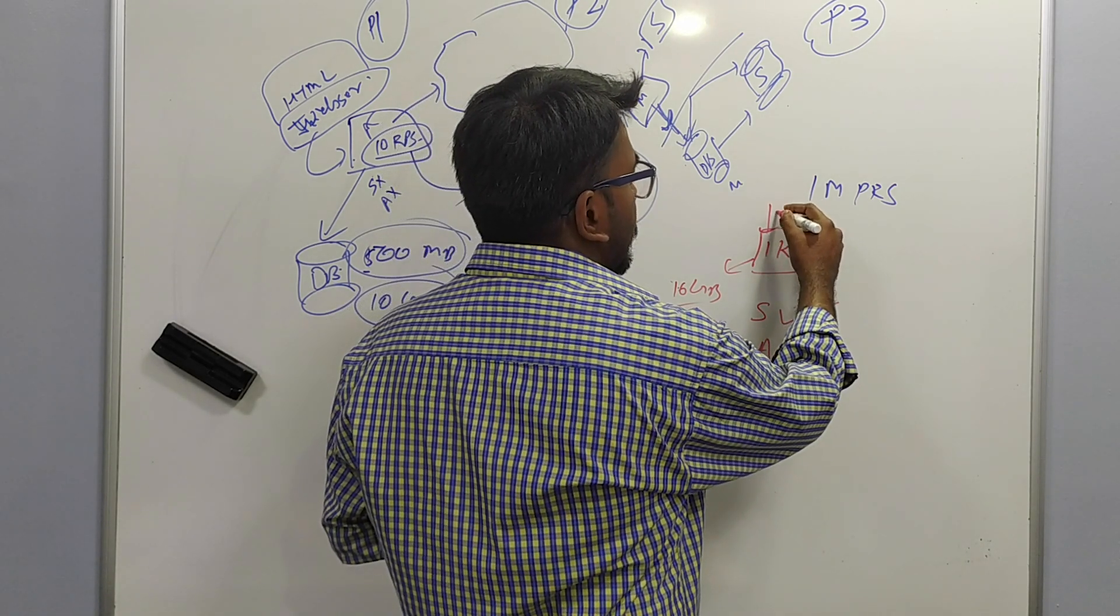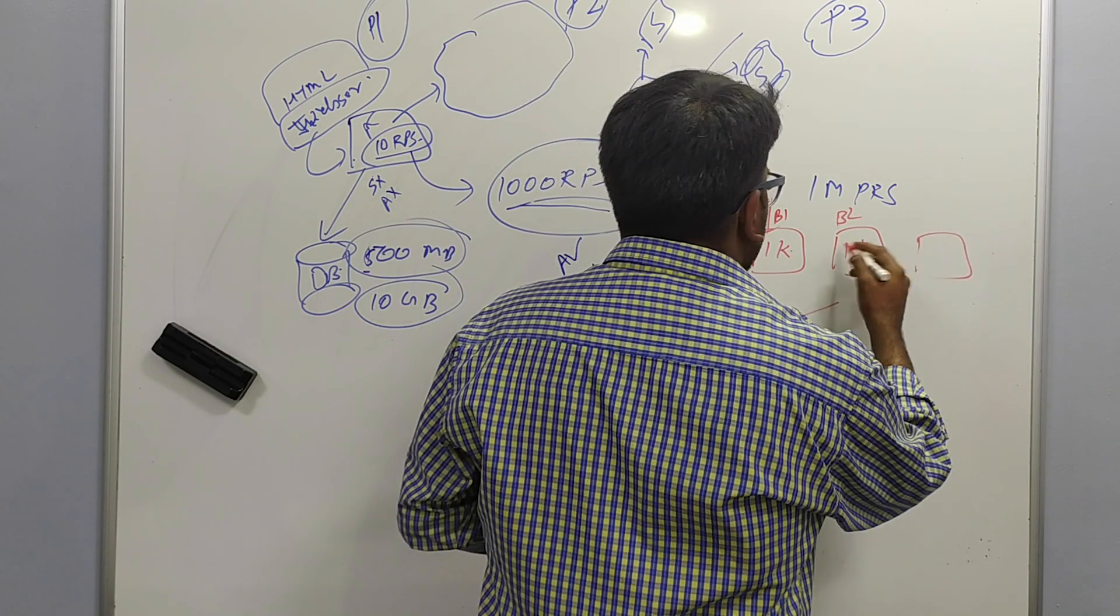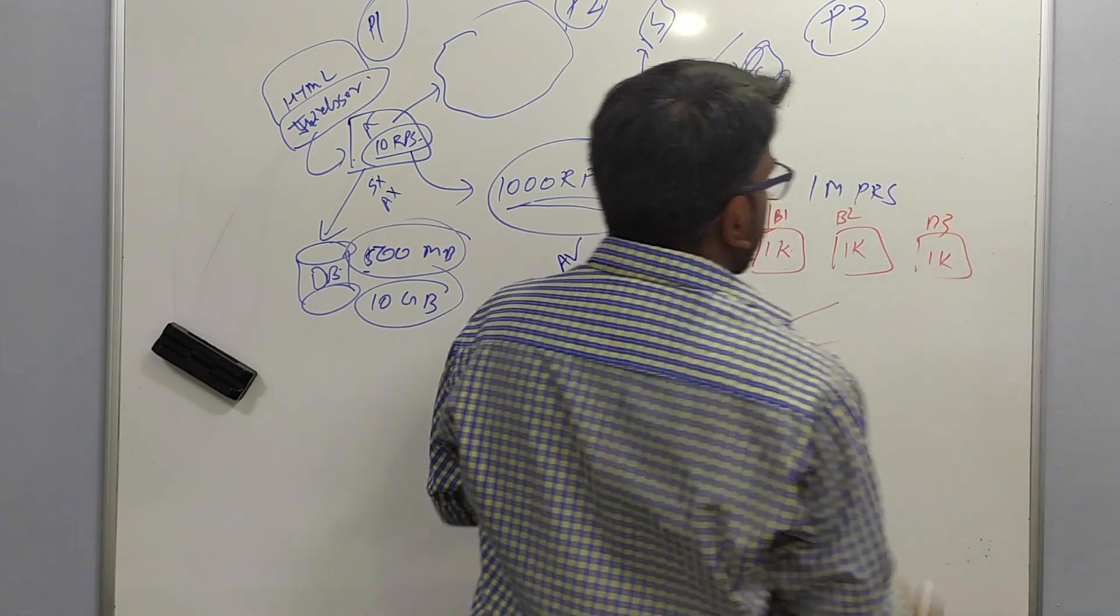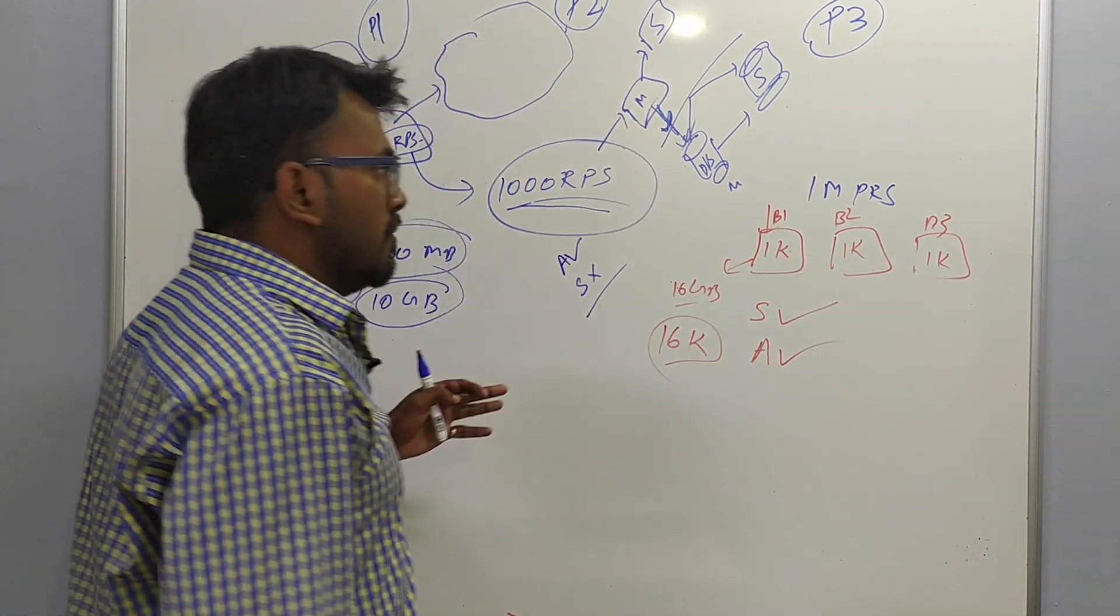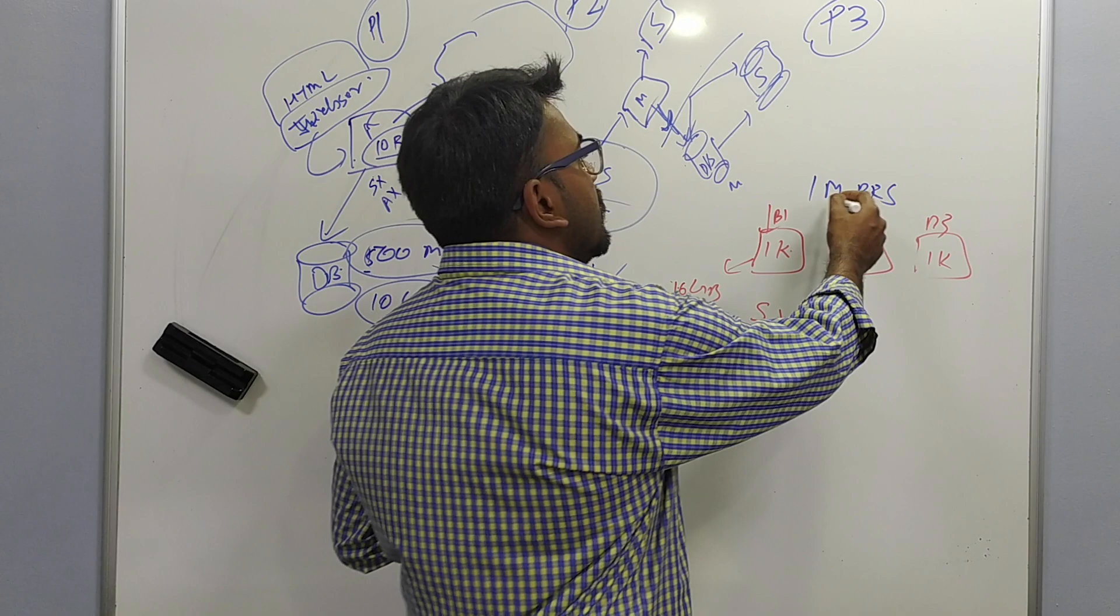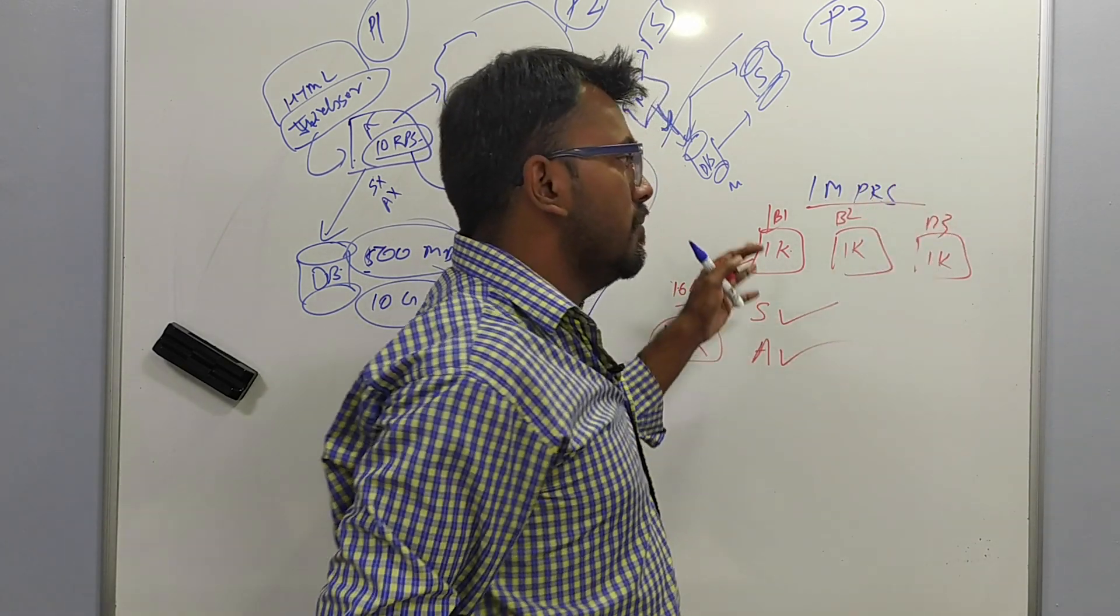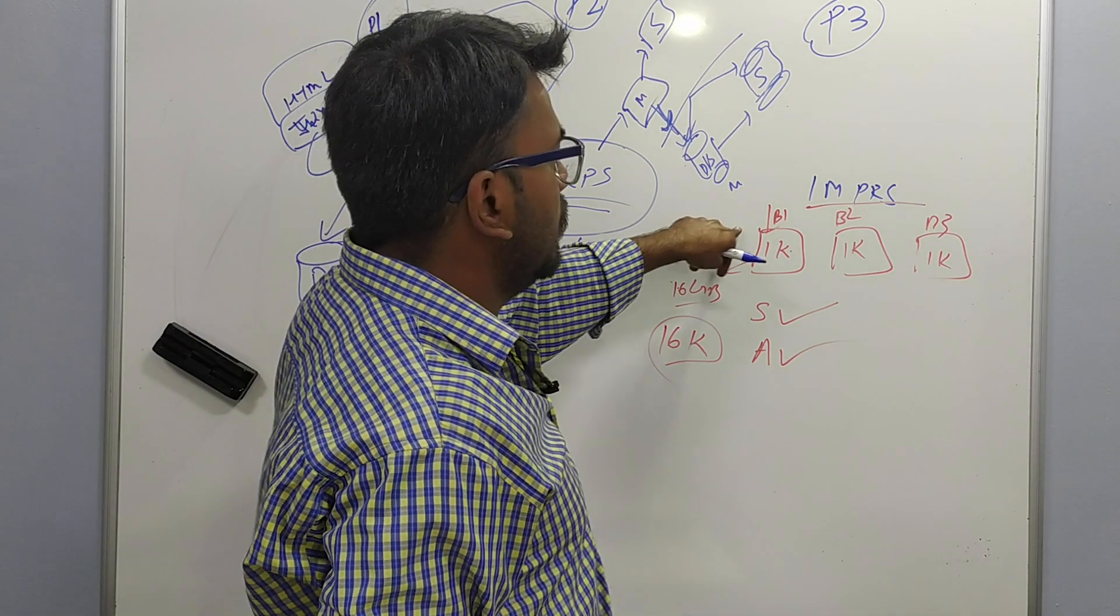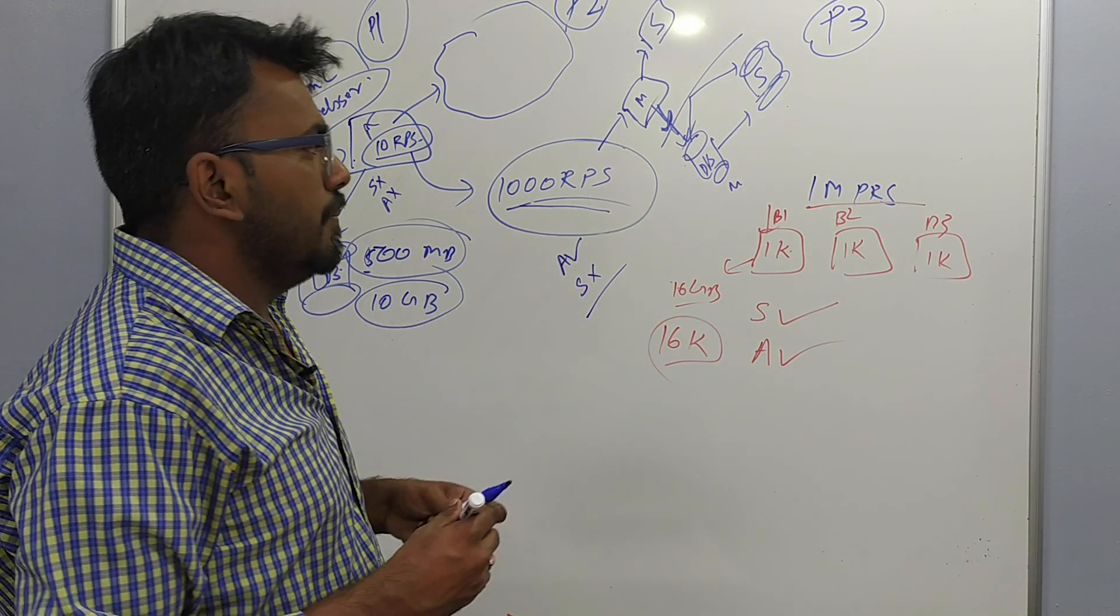So what horizontal scaling means is that you are using multiple boxes to handle your requests. So instead of putting just one box, you will use multiple boxes b2, b3. Each will handle 1k RPS. You will use identical boxes or maybe different configuration boxes. But the idea is you will use multiple boxes. And each of the boxes will handle some amount of requests, so that overall system will handle the complete request. If it's 1 million RPS and each box handles 1000 requests, 1 million divided by 1000, whatever number of boxes comes in, you will have to use those number of boxes.